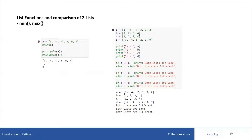In this video, we are going to talk about two functions which we can use with list variables, and then we will see how to compare two lists. So the functions are min and max. As the name suggests, min will give the minimum value from the list values and max will give the maximum value from the list values.